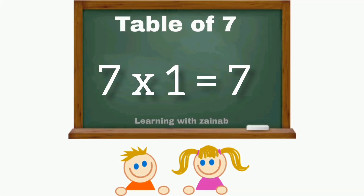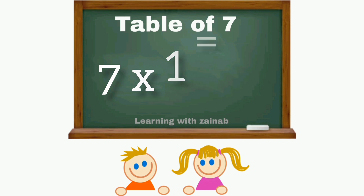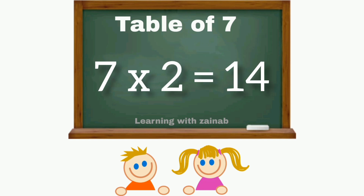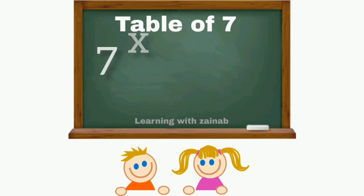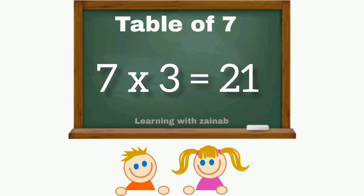Seven ones are seven. Seven twos are fourteen. Seven threes are twenty-one.